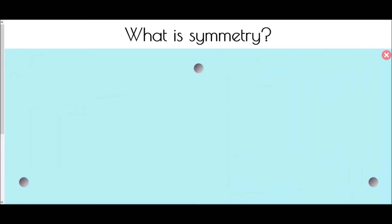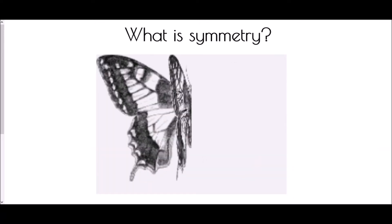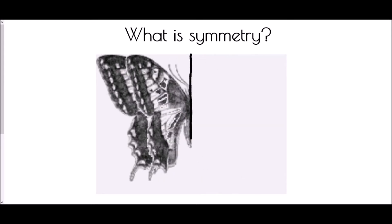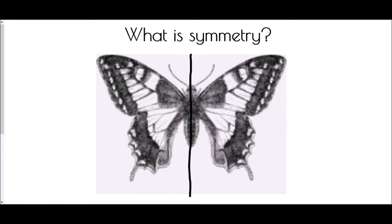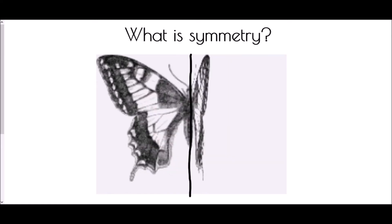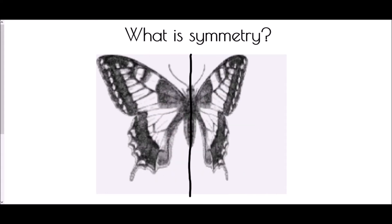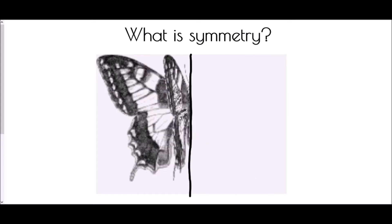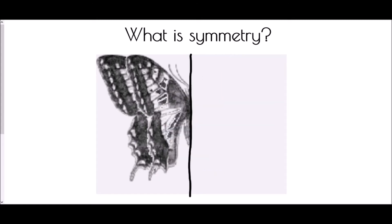So we need to begin with the question: what is symmetry? Well, symmetry is something you'll be very familiar with and something you'll have been looking at for many, many years, and it comes up a lot in nature. If we think about a butterfly, we have the image straight down the centre of that shape — exactly the same image on either side, just in a mirror image. That is exactly what symmetry is: where we have the same on either side of a line of reflection.